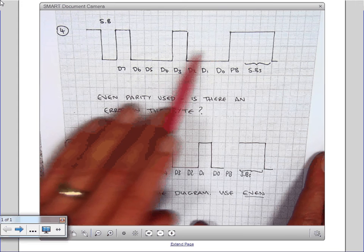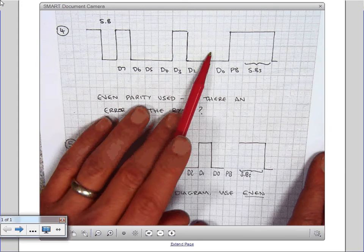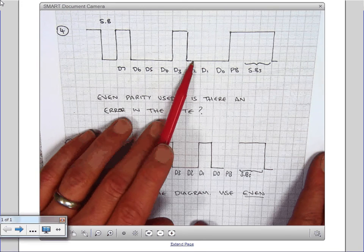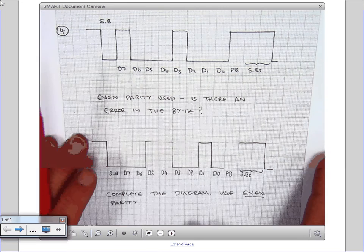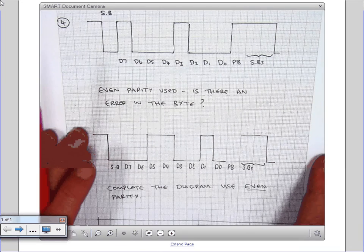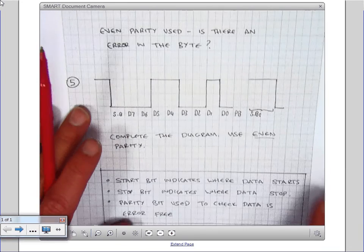Now, we don't know where the error is. Maybe a one's been transmitted here, and it's been corrupted and become a zero. But we know there is an error, so the receiver can contact the transmitter and ask them to resend that one.